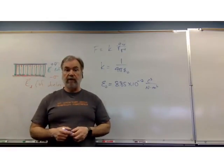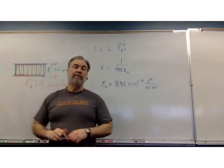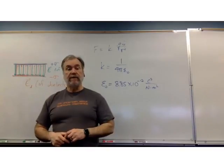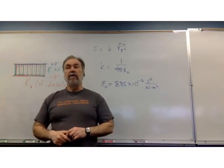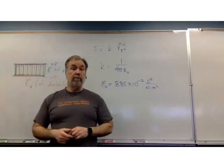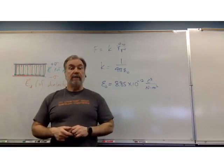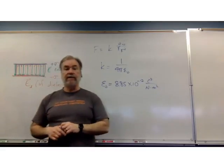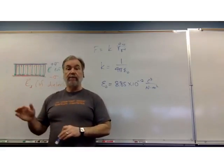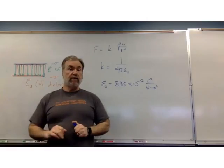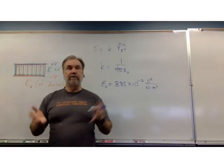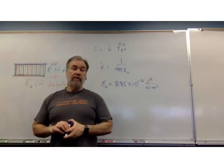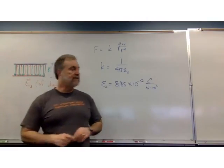And it turns out that vacuum is the medium, the stuff, the environment that electric fields can travel through most easily of all, and maybe that makes sense. There's nothing at all to interfere with the electric field. So anything else other than vacuum, air or plastic or wax or water or anything else, ceramic, they're all going to have a value of permittivity also. But the permittivity is going to be larger than the permittivity of vacuum. And that's simply because it's harder for electric fields to travel through things other than vacuum than it is for it to travel through vacuum itself.